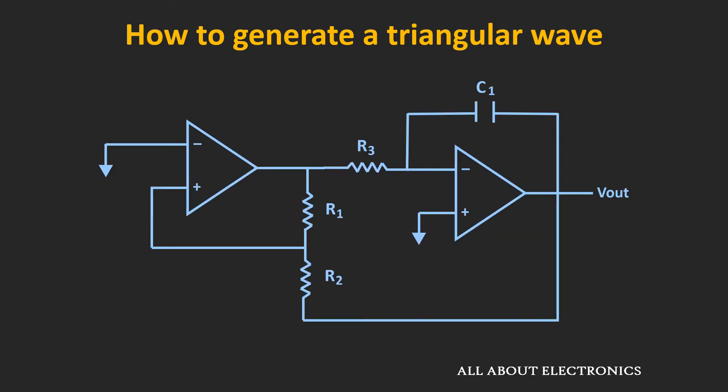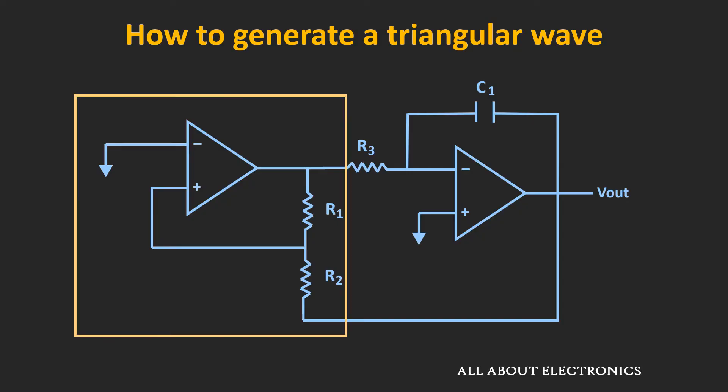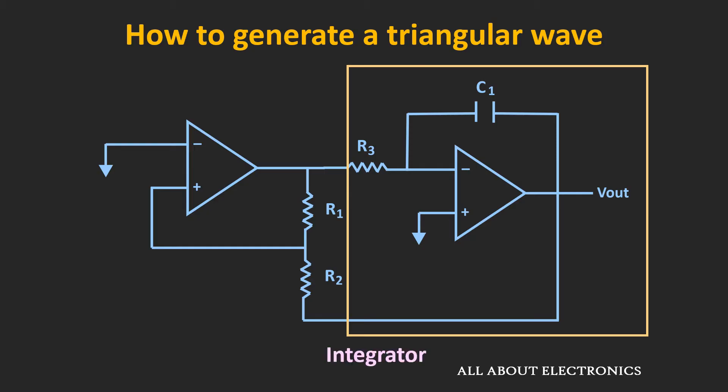Here is the circuit diagram for the triangular wave generator. As you can see, the first part of this circuit is the Schmitt Trigger circuit and the second part is the integrator. And if you observe, there is a feedback from the output of the integrator to the Schmitt Trigger circuit.